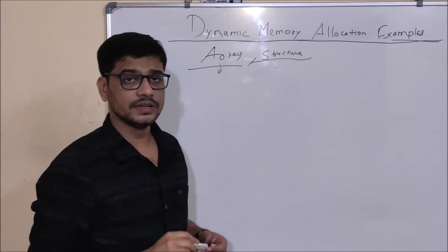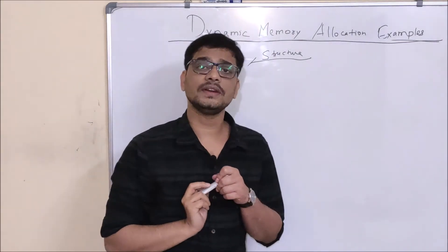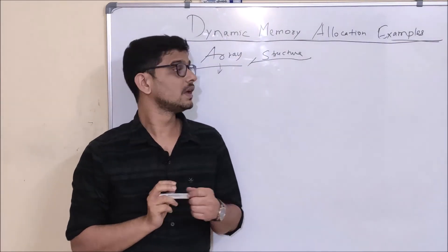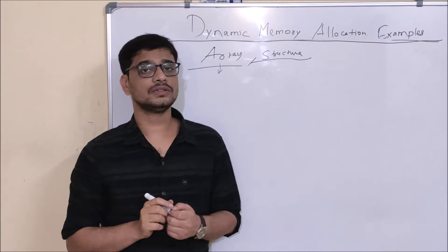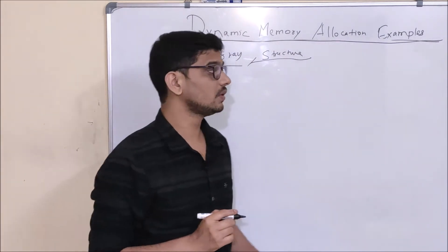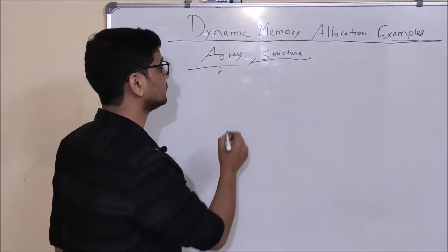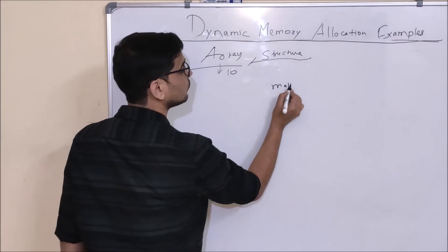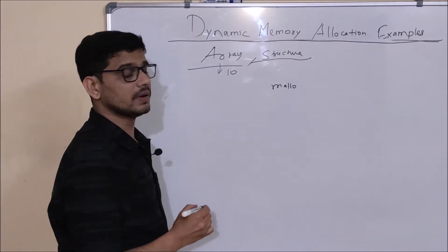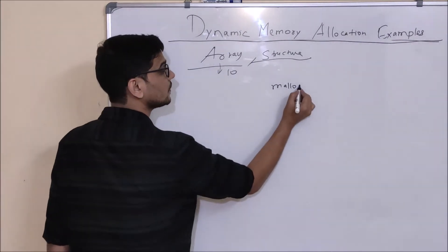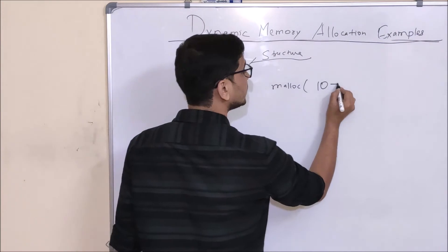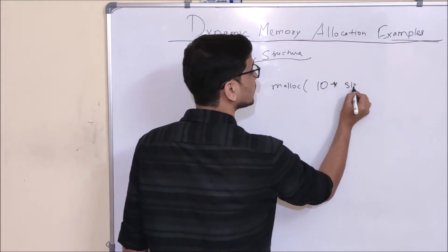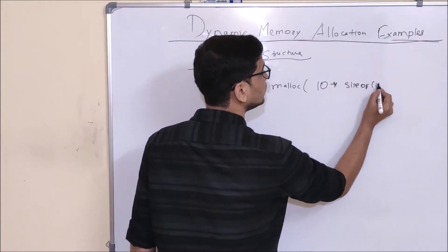What I am going to do here is create an array which can store 10 elements, and I will do it using dynamic memory allocation. I will use the malloc function to take memory — malloc of 10 into sizeof(int).